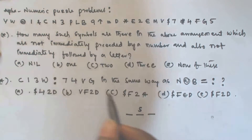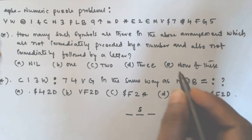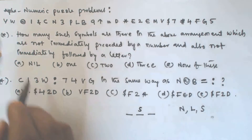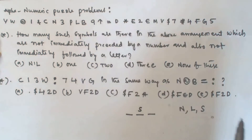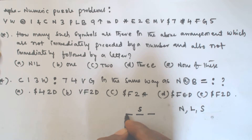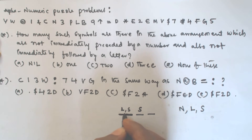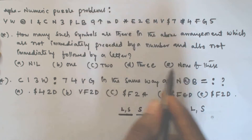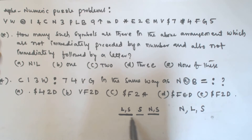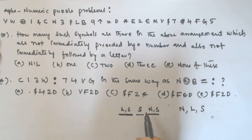If you observe the sequence, there are three types of terms: numbers (0–9), letters (A–Z), and symbols such as @, &, ↑, =, *, etc. The condition is: the symbol must not be preceded by a number — so either a letter or symbol can come before it — and must not be followed by a letter — so a number or symbol must follow it.